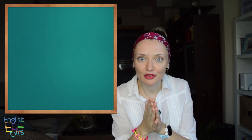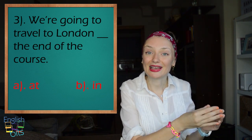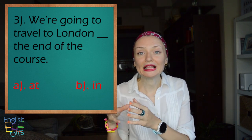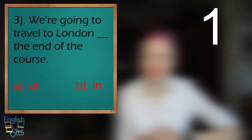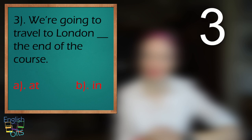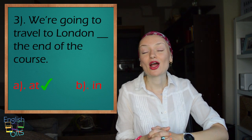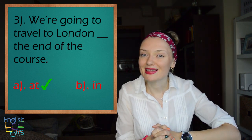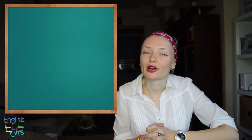Sentence number three: 'We're going to travel to London — A) at the end of the course, or B) in the end of the course.' Which is the correct option? The correct answer is: 'We're going to travel to London at the end of the course.'